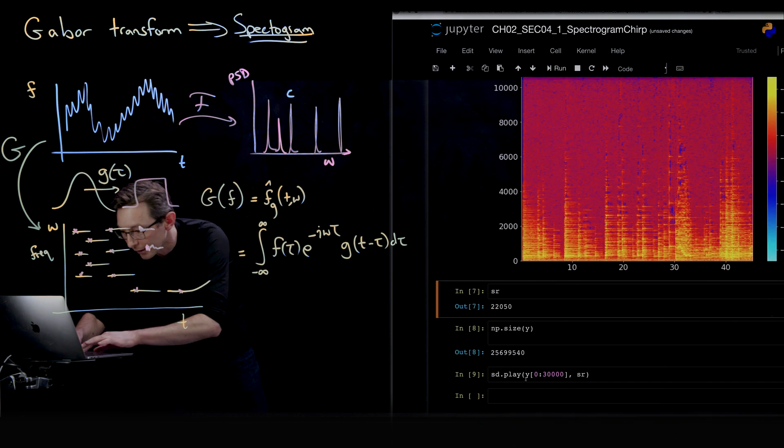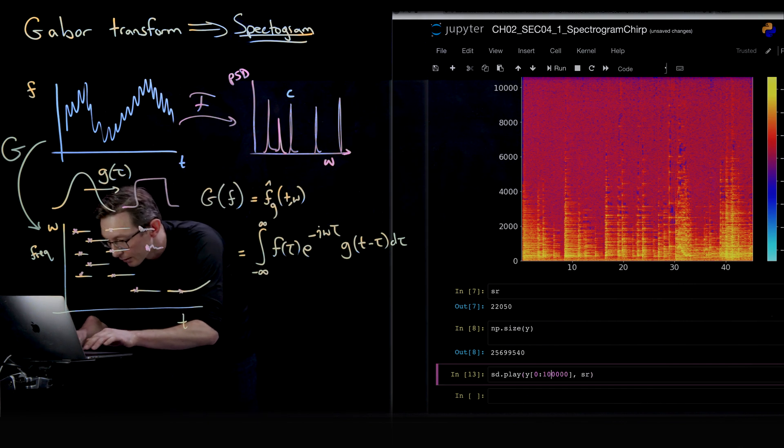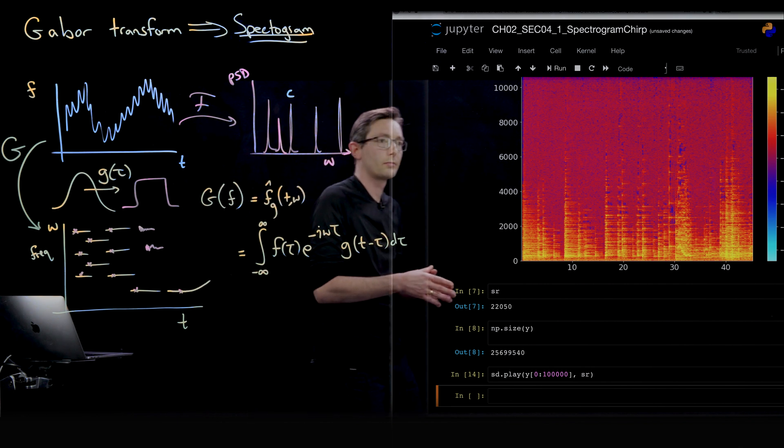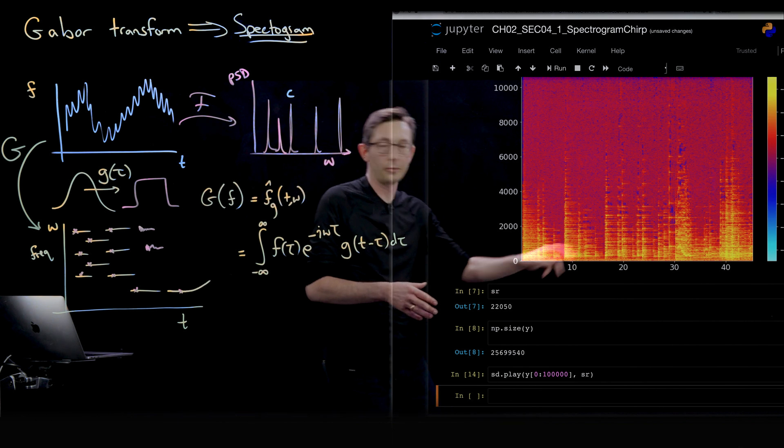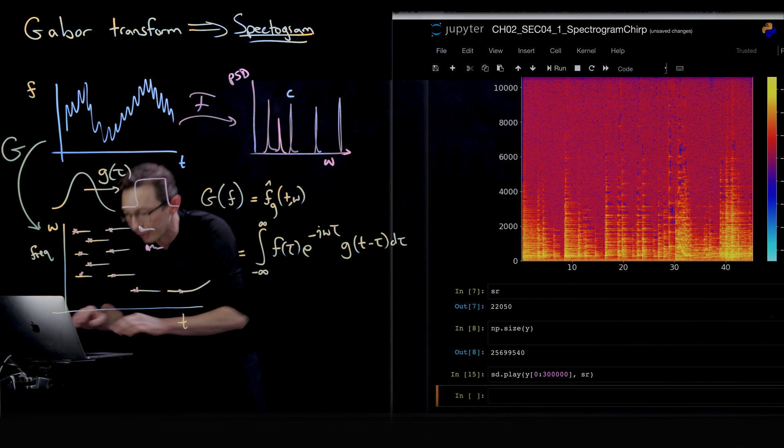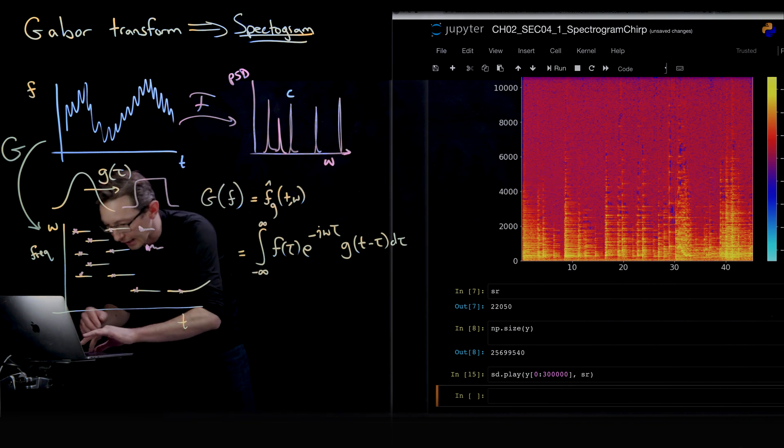It's a long song and I can play the first 30,000 elements right here using this. That was a little too short. Let me make it a little longer. You can see the different progressions. I'll make it a little longer still. And then while this is playing, I'll show you a neat part of the book. So this is the first some seconds of this.